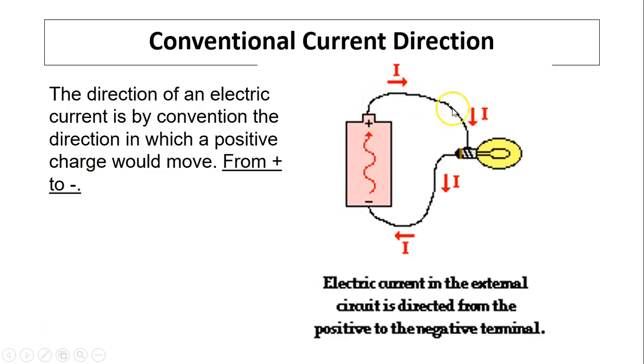When it goes back, it cannot go—positive and negative attract—it cannot go to the positive side. That's why the battery has to do work. When the battery does work, it changes this energy to electrical energy. So electric current in the external circuit is directed from the positive to the negative terminal.